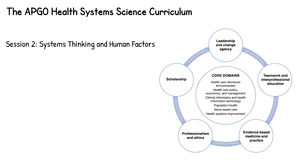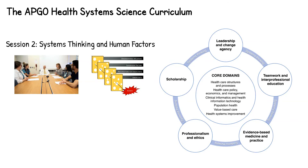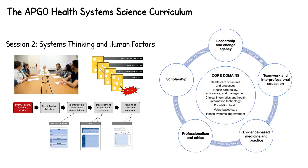The second program focuses on an event analysis after a patient experiences a ruptured ectopic pregnancy due to a preventable medical error. Learners will proceed through a dynamic systems thinking approach using human factors analysis — not only identifying systemic vulnerabilities, but also brainstorming solutions and ranking them using a matrix that accounts for feasibility, acceptability, and other factors. This lesson emphasizes healthcare structures and processes, health systems improvement, health information technology, and value-based care.